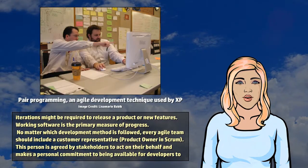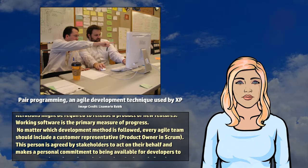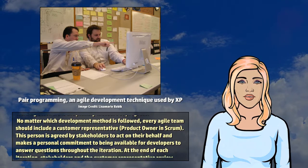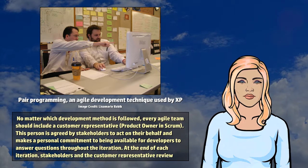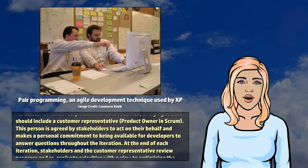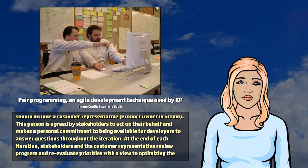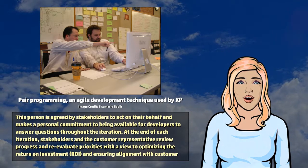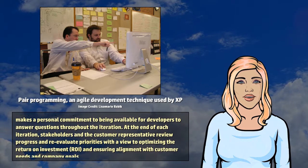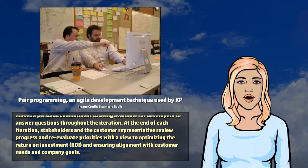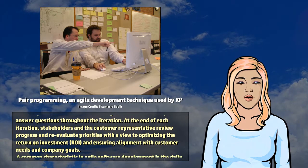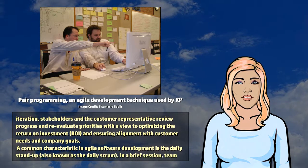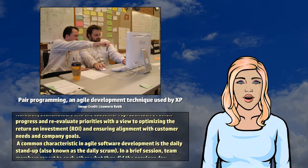No matter which development method is followed, every Agile team should include a customer representative — product owner in Scrum. This person is agreed by stakeholders to act on their behalf and makes a personal commitment to being available for developers to answer questions throughout the iteration. At the end of each iteration, stakeholders and the customer representative review progress and reevaluate priorities with a view to optimizing the return on investment (ROI) and ensuring alignment with customer needs and company goals.